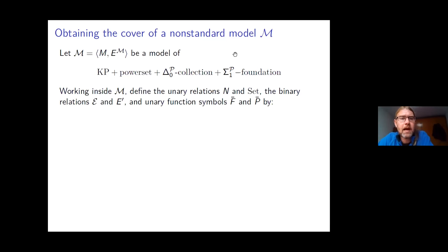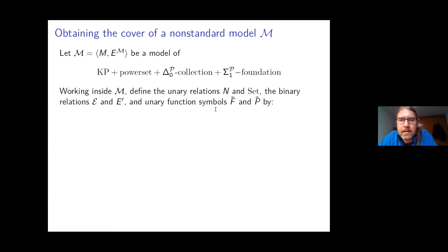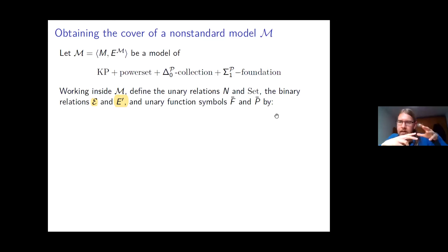Working inside M: make a copy of everything in M labeled with 0, and declare all these things with label 0 to be urelements, with the E-membership relation on them identical to M's membership. Sets are defined recursively — things labeled 1 containing only sets or urelements (analogous to defining forcing names). Then define a membership relation on the sets based on their labels and contents.